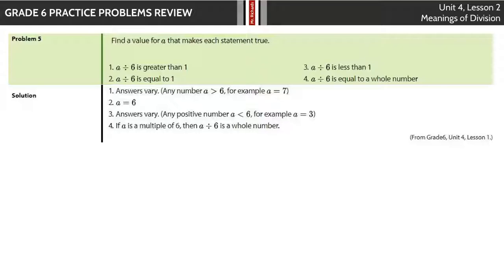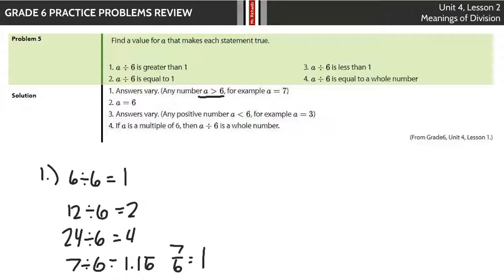Number 5, find a value for A that makes each statement true. A divided by 6 is greater than 1. Well, if I take 6 divided by 6, that's going to be exactly 1. If I take 12 divided by 6, that's 2. That's big enough. 24 divided by 6, that's 4. That's big enough. And they say any number here where A is greater than 6, for example, A could equal 7. Well, if you were to take 7 and divide by 6, you will get a decimal here at 1.16 repeating. It's also looking at the fraction 7 sixths, which is 1 and 1 sixth, all equivalent stuff here. So you will get something that's greater than 1 there.